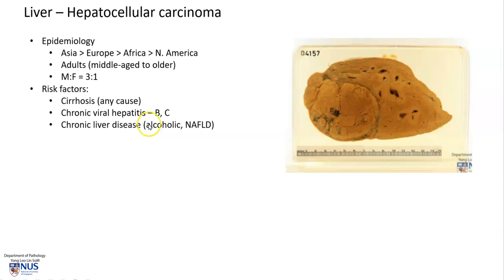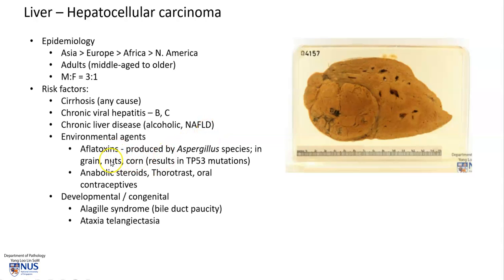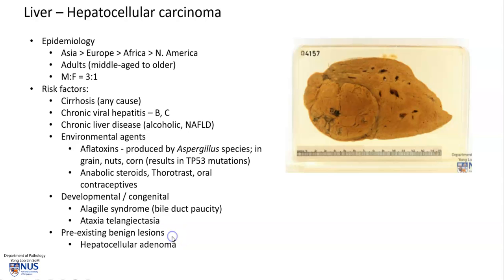Chronic viral hepatitis, in particular hepatitis B and C, is also a predisposing factor, as well as chronic liver disease, which can be alcoholic or non-alcoholic fatty liver disease. Environmental agents such as aflatoxins — produced by the fungal species Aspergillus and found in some grains — can result in mutations giving rise to hepatocellular carcinoma. Anabolic steroids, Thorotrast, and oral contraceptives have also been linked with HCC, as well as some developmental or congenital disorders.